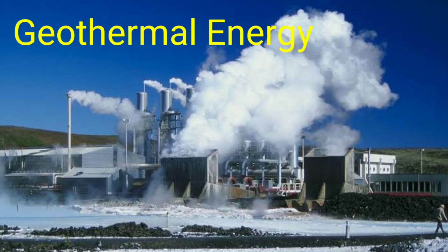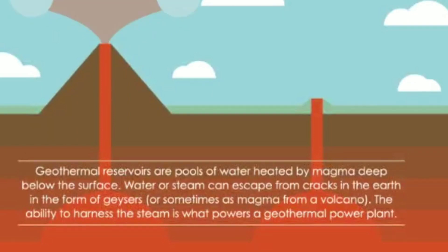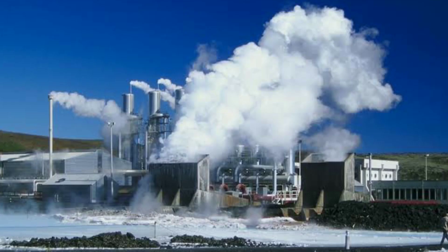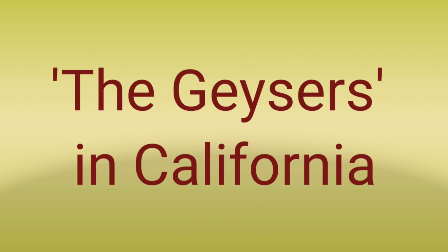Geothermal energy is the heat that comes from the rocks and hot springs underneath the Earth's crust, and can be found far down to the Earth's hot molten rock — that is, magma. To tap this form of energy, wells are dug deep underground to access steam and hot water. The power of steam and hot water is used to drive turbines connected to electrical generators.